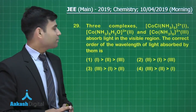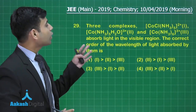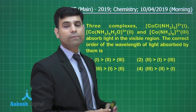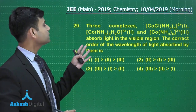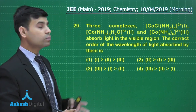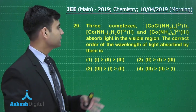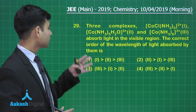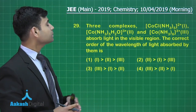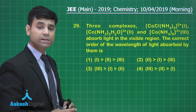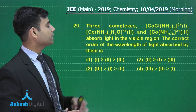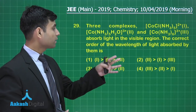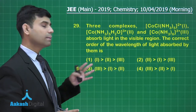The next question involves 3 complexes: [Co(Cl)(NS3)5]²⁺, [Co(NS3)5(H2O)]³⁺, and [Co(NS3)6]³⁺. The question asks for the correct order of the wavelength of light absorbed by them.